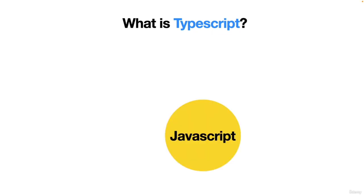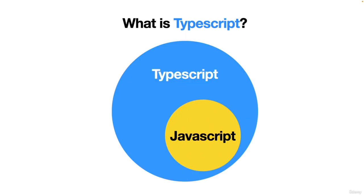What is TypeScript basically? TypeScript is nothing but a superset for JavaScript. Everything that you can do with JavaScript, you can also do with TypeScript. On top of that, you can also have additional functionalities like strictly typed checking, object-oriented functionalities, and much more modularization, using which you can write large or complex applications very easily.